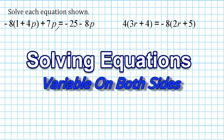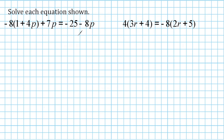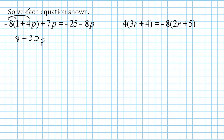This first equation has a variable on both sides, and we have to get that variable on the same side, but first we need a little simplification. Outside the parentheses we have a negative 8, so we distribute it to each term inside. Negative 8 times 1 is negative 8, and negative 8 times positive 4p is negative 32p. The negative 8 is not part of the 7p, so we just bring positive 7p down.